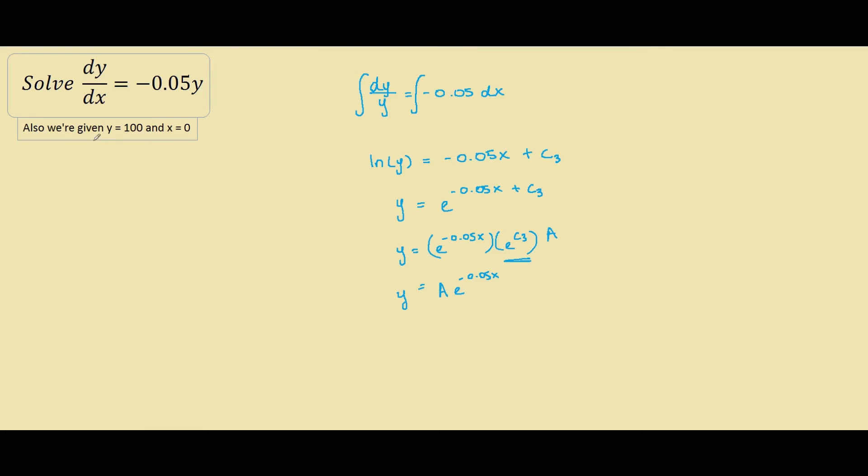Now we can use our given information to find a. So we have 100 equals a e to negative 0.05 times 0. e raised to 0 is just 1 so we consider this whole section 1, that means our a is 100.